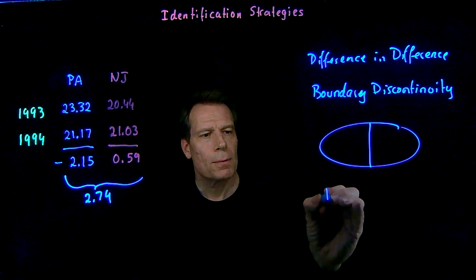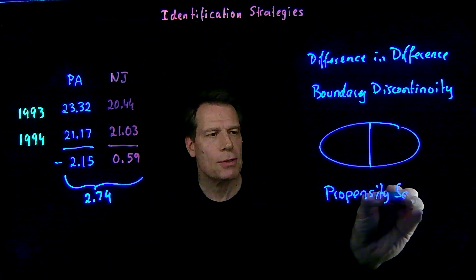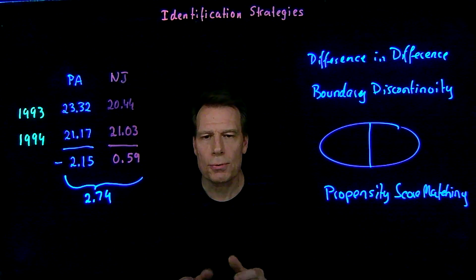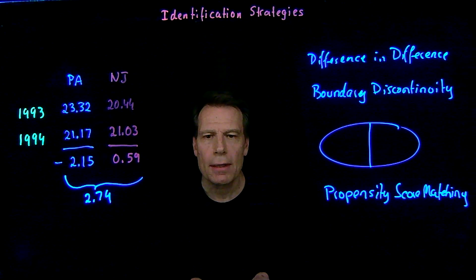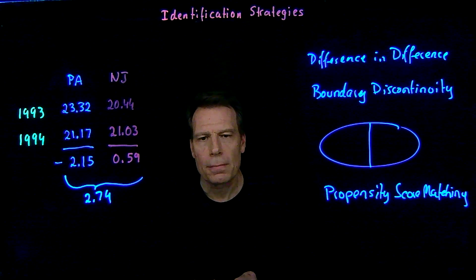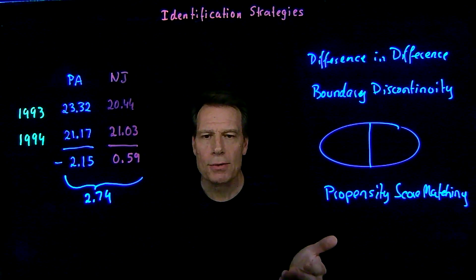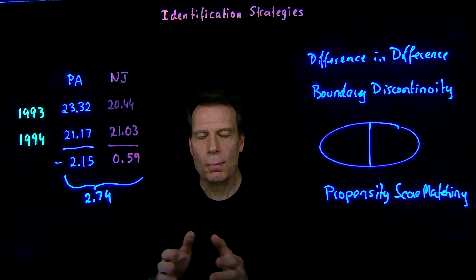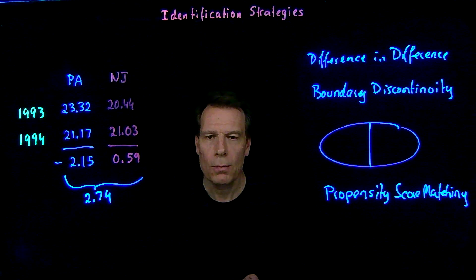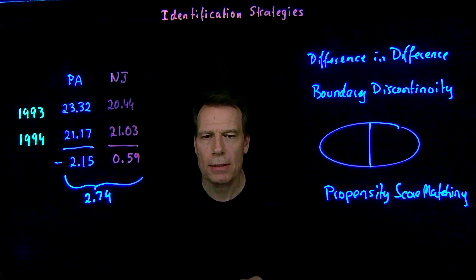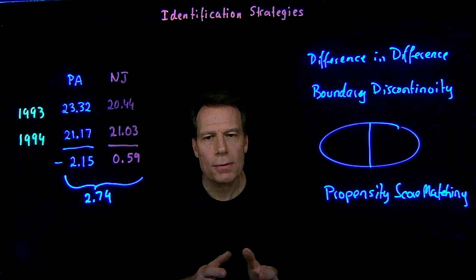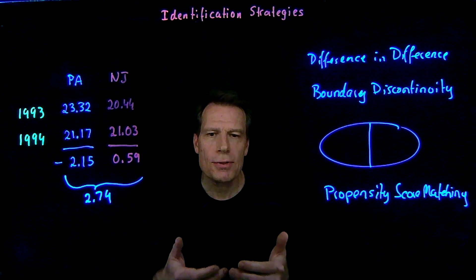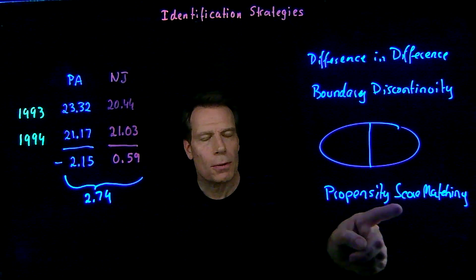Finally, we talked about propensity score matching, focusing on the impact of preschools on child outcomes. The question is: does going to preschool cause children to do better in school, score higher on tests, or be more likely to graduate? We could compare kids who go to preschool with those who don't, but there may be confounders — families who send their children to preschool may be different in all sorts of ways from those who don't.